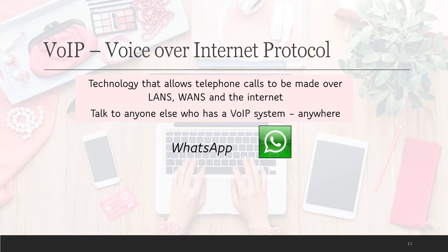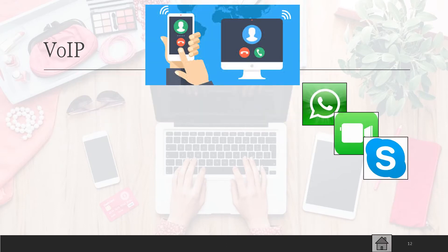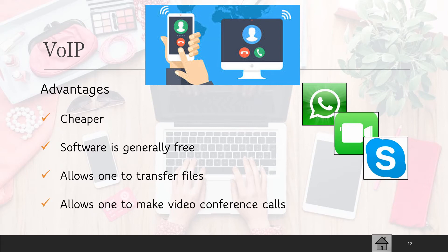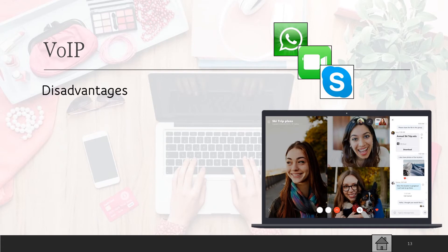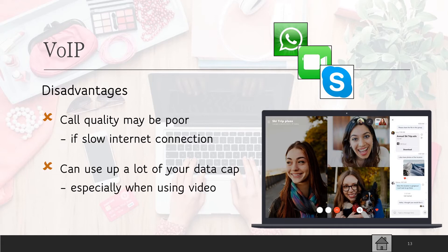Examples of VOIP include WhatsApp calling, FaceTime calling, Skype, and Zoom. The advantages of VOIP are that it's much cheaper than normal landline or even cellular calling, the software is usually free, you can also transfer files using the same software, and you can make video conference calls where you can see and hear each other. The disadvantages are that call quality may be poor if you have a slow or weak internet connection, and it can use up a lot of your data cap, especially if you're using video.